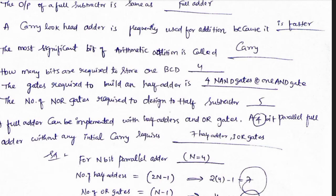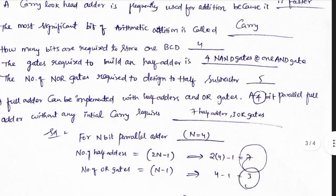How many bits are required to store one BCD digit? A BCD is stored in binary code — a decimal digit is stored in any number of bits. 0 to 9: if it is 0 it will represent 0000, if it is 9 it will represent 1001, so it will be 4 bits. For octal, the base is 8, so it will be 3 bits.